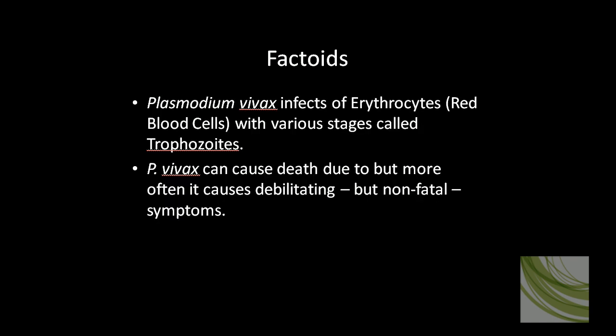You can identify infected blood by looking for little structures called trophozoites. There are many stages of trophozoites and I'm not going to go into them here, but I will show you on the slide several examples of trophozoites that are inside the erythrocyte.